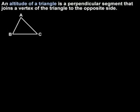in triangle ABC, shown here, segment AX is an altitude because one of its endpoints, A, is a vertex of the triangle, and its other endpoint, X, is located on the opposite side of the triangle such that segment AX is perpendicular to the opposite side, BC.